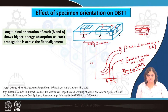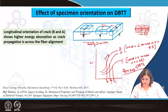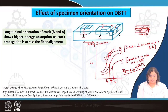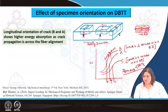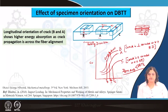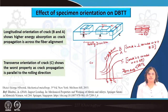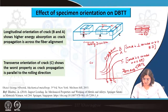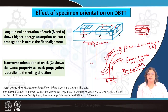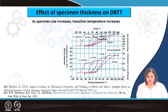This is what is explained here: when the crack is longitudinally oriented — both A and B — higher energy absorption is required as the crack propagation is across the fiber alignment. Fiber alignment refers to the way the microstructural features are aligned like a fiber. If the crack propagates perpendicular to or across that alignment, higher energy is required. On the other hand, for transverse orientation such as case C, the worst property is shown as crack propagation is parallel to the rolling direction.